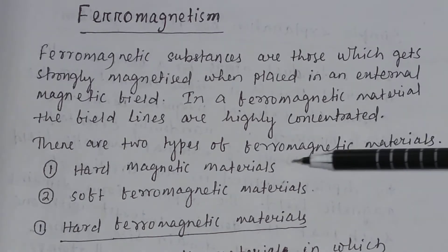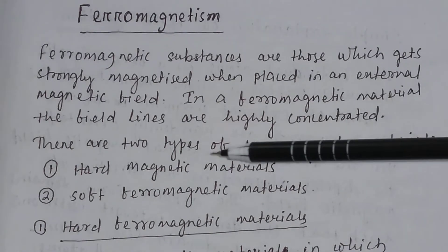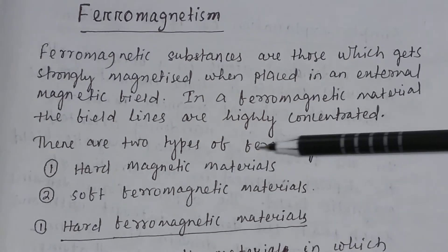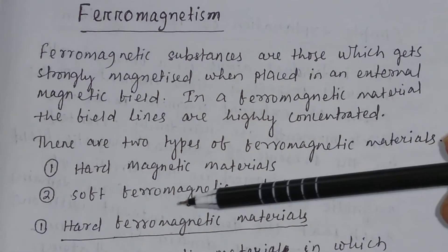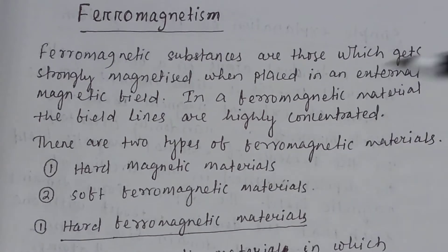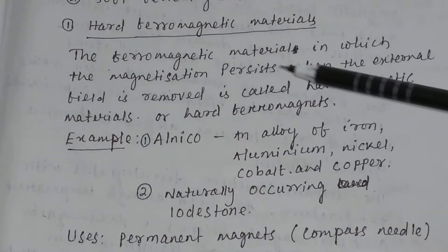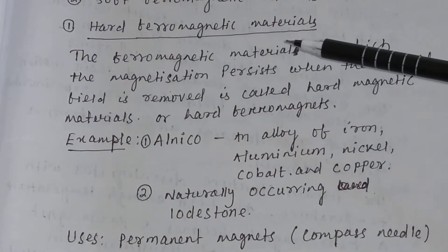There are two types of ferromagnetic materials: 1. Hard Ferromagnetic Materials, and 2. Soft Ferromagnetic Materials. What are hard ferromagnetic materials?